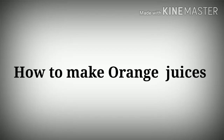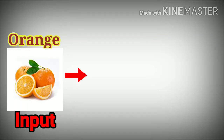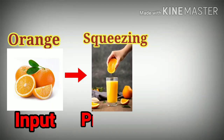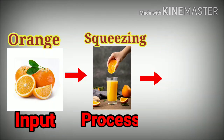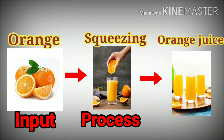Do you know how to make orange juice? First we take the orange — the orange is the input. Then we squeeze the orange; squeezing is the process. After squeezing, we get juice — that juice is the output.